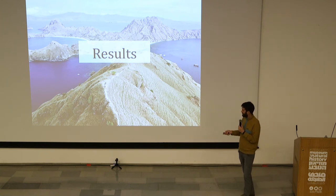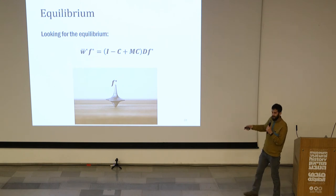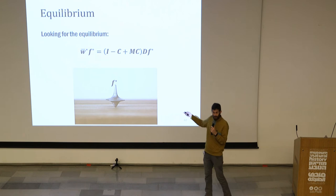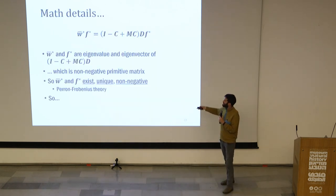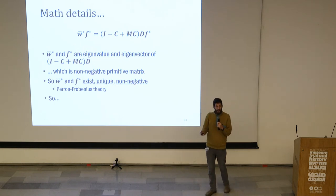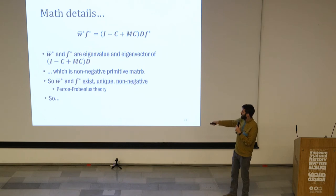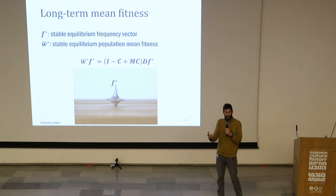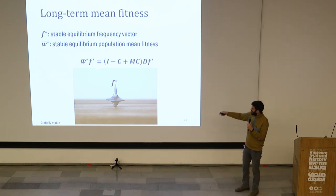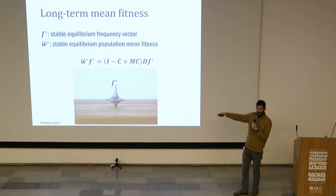Some results from our general model. The first thing we look for is an equilibrium — some special frequency vector F that won't change over time. From nice mathematical properties of the parameters C, M, and D, we can find through the Perron-Frobenius theory that there exists a stable equilibrium: an F-star, some frequency vector that is stable, and W-hat-star, the mean fitness of the population, that will also be stable. In mathematical terms, the mean fitness is an eigenvalue of the matrix and F-star is the eigenvector.